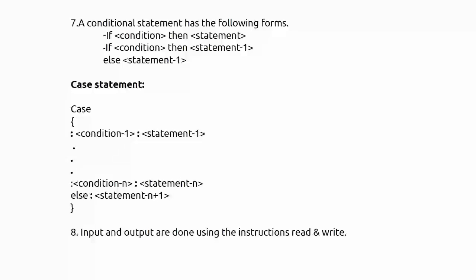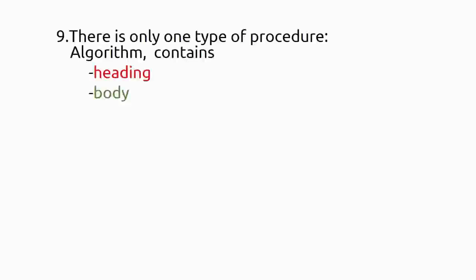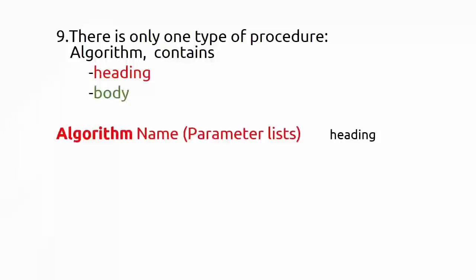There is only one type of procedure in any algorithm. It consists of two parts: the heading and the body. The heading contains the keyword 'algorithm', the name of the algorithm, and the parameter list. Everything inside the opening and closing braces is called the body of the algorithm.